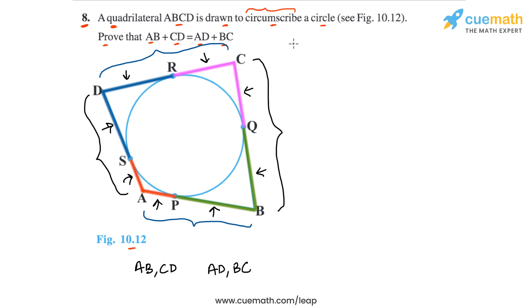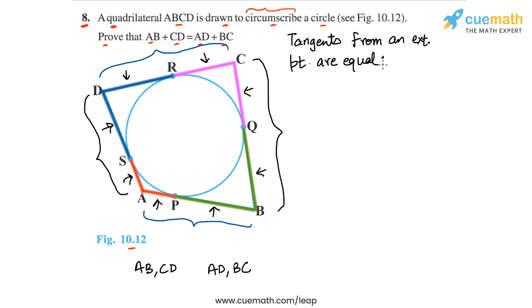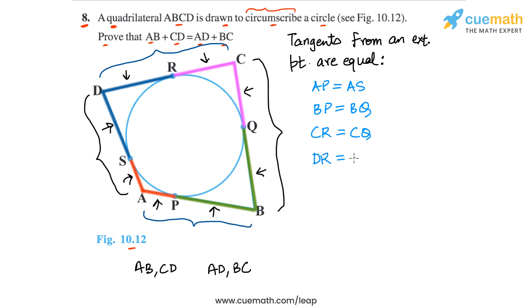Now let's write out the proof properly. We make use of the fact that tangents drawn to a circle from any external point are equal. So: AP equals AS — these are the two red segments highlighted in the figure. BP equals BQ — these are the two green segments. CR equals CQ — these are the two pink segments. And DR equals DS — these are the two dark blue segments.